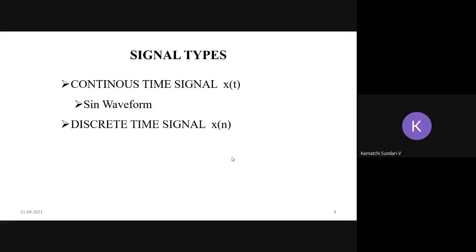And the signal types, so basically the signals are classified into two different categories: continuous time signal and discrete time signal.